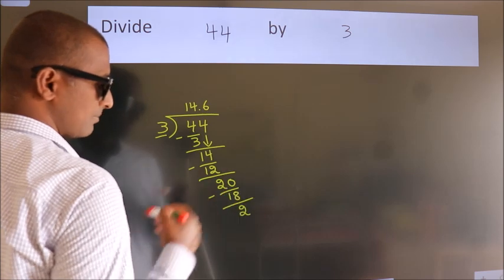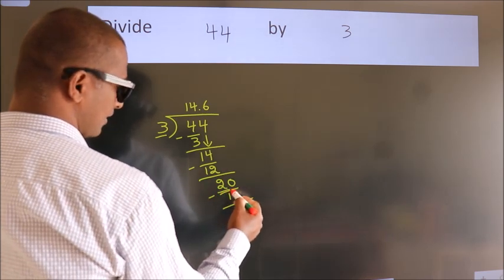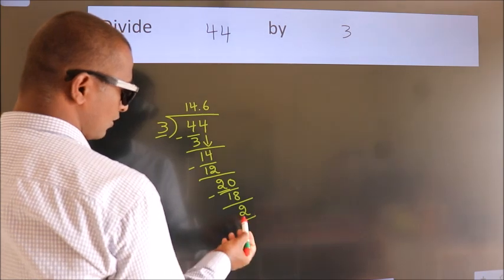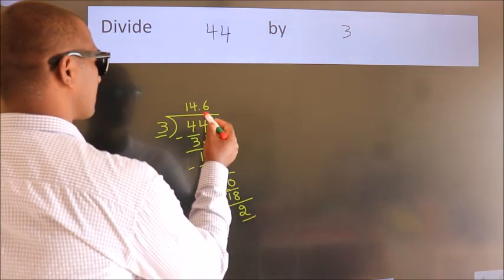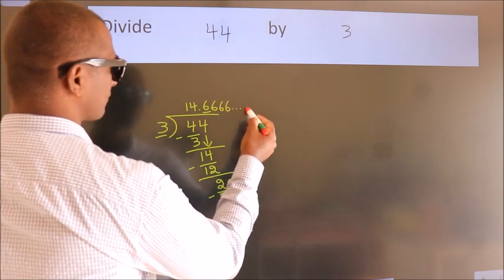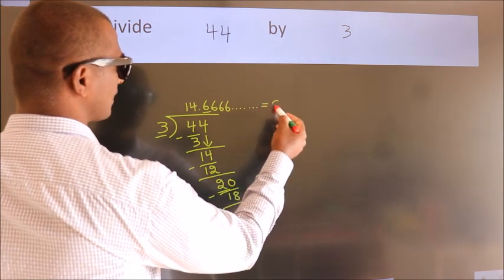Now, you observe. We had 2 here and we got 2 again. That means, this number keeps on repeating. So, this is our quotient.